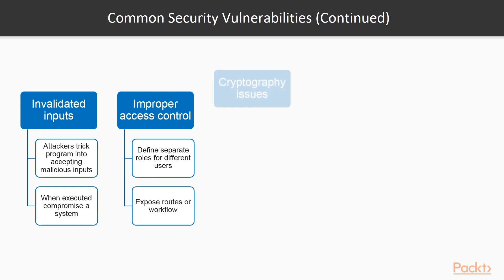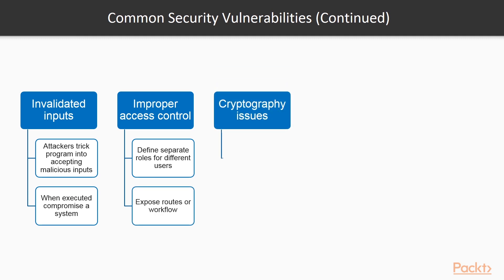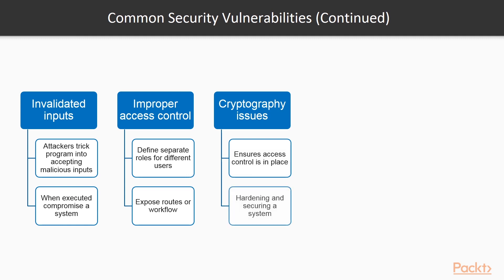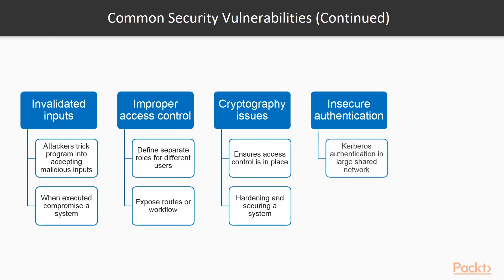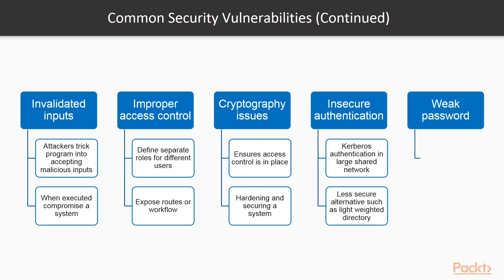After that is cryptography issues — simply ensuring access control is in place is not enough for hardening and securing a system. Next is insecure authentication — prefer secure authentication techniques on a web server over insecure ones. For example, prefer Kerberos authentication in a large shared network over less secure alternatives such as Lightweight Directory Access Protocol (LDAP) or NT LAN Manager (NTLM).